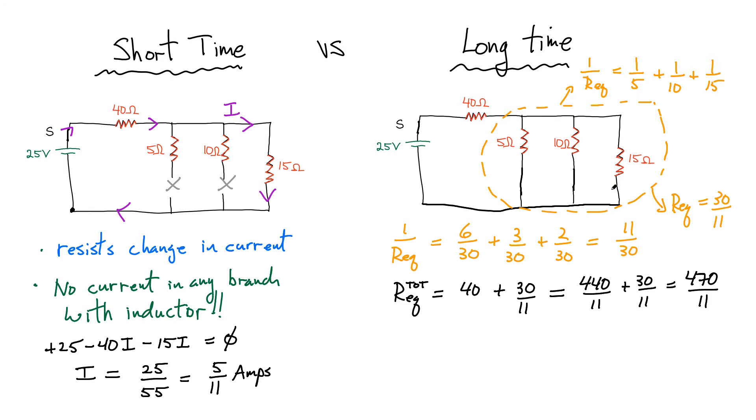I've replaced the entire network here with one equivalent resistance of 470 over 11. We should be able to now simply apply Ohm's law to find the current through this outer branch. So I'm going to call this current I. It's the current flowing up to this junction and then splits. But let's start by solving that current I. So we have a 25 volt battery connected to this equivalent resistance of 470 over 11, which equals the current I. 25 times 11 is 275 divided by 470.